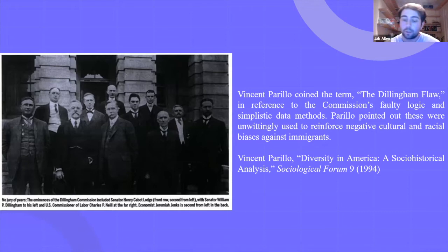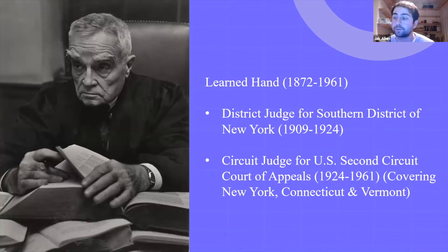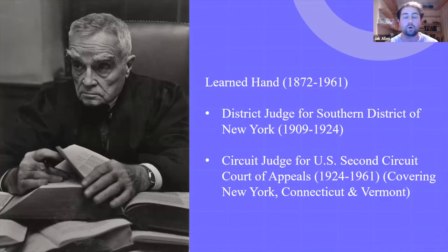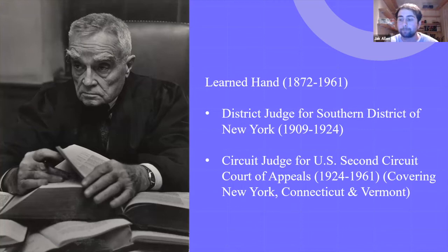Learned Hand sat as a district judge and then became a Second Circuit appellate judge, making him in many senses the last line of defense prior to the Supreme Court. The Second Circuit covers New York, Connecticut, and Vermont — particularly New York City, a massive gateway for immigration. He was hearing a great many immigration proceedings and is often considered one of the most, if not the most, talented judge not to sit on the Supreme Court in the 20th century.